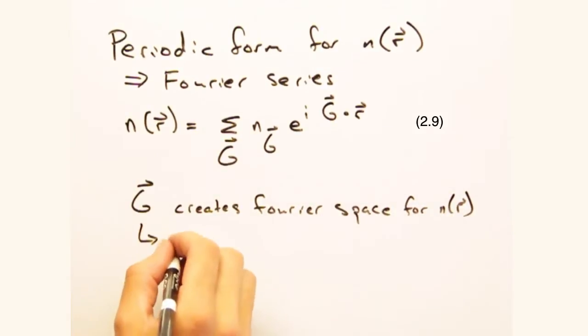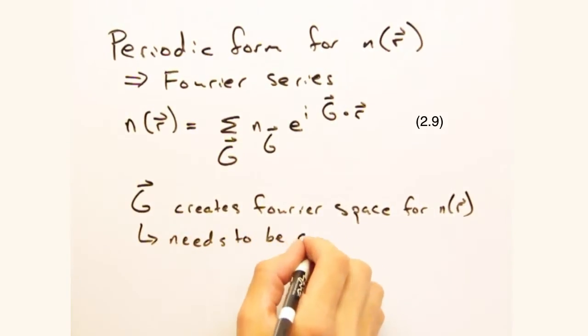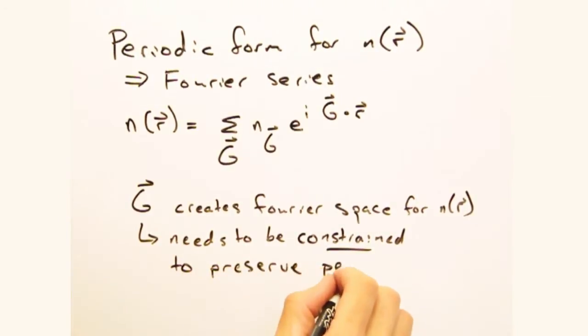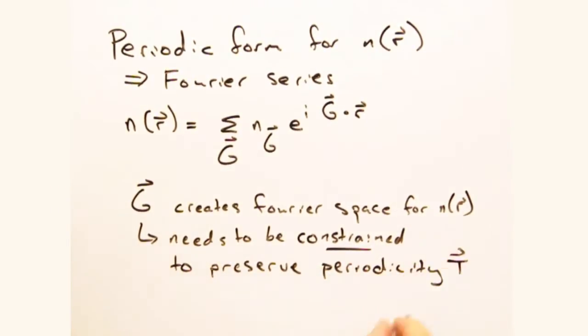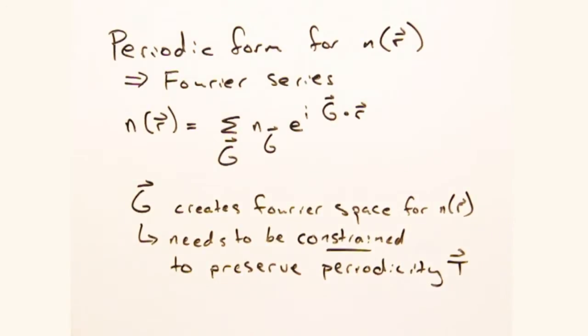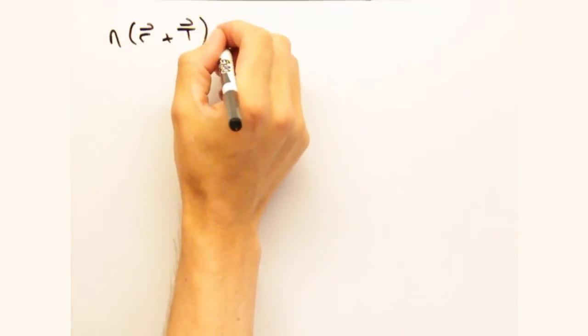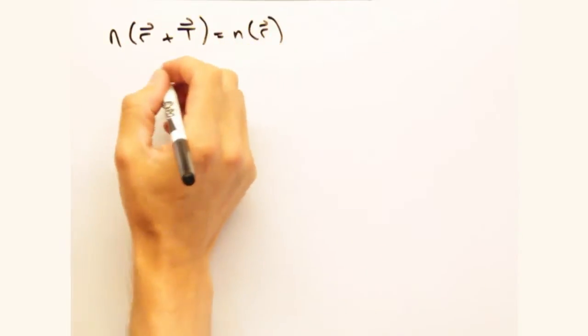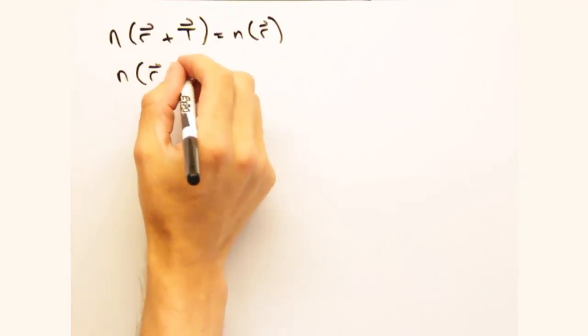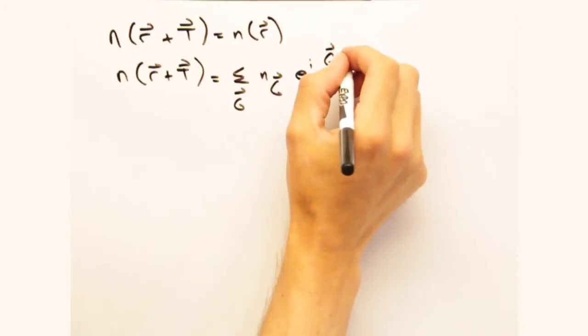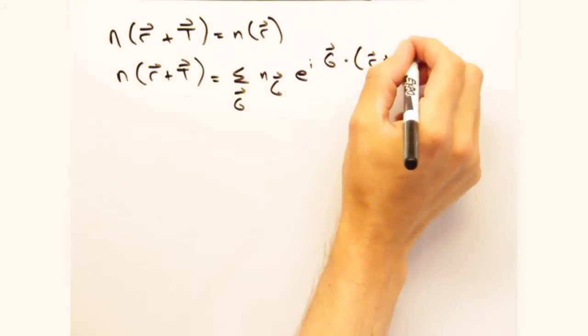But remember, we began with an infinitely periodic solid. Now that we have this sum, we need to constrain g so that our n of r expression still satisfies this translational symmetry. And for that to occur, n of r plus our translational vector t, which we introduced last week, should equal n of r. Plugging r plus t into our Fourier series and separating the exponentials, we get the following.